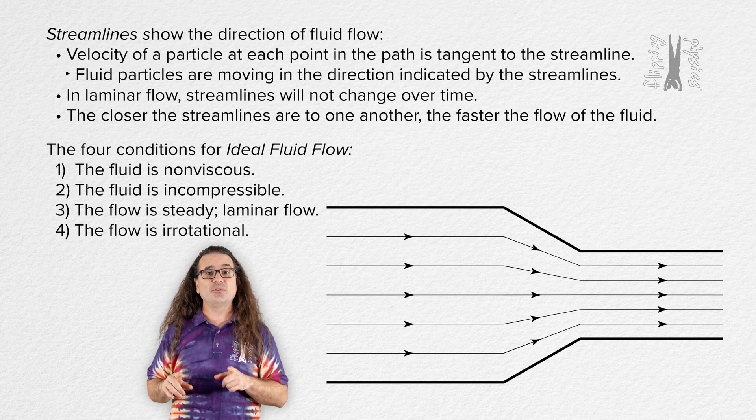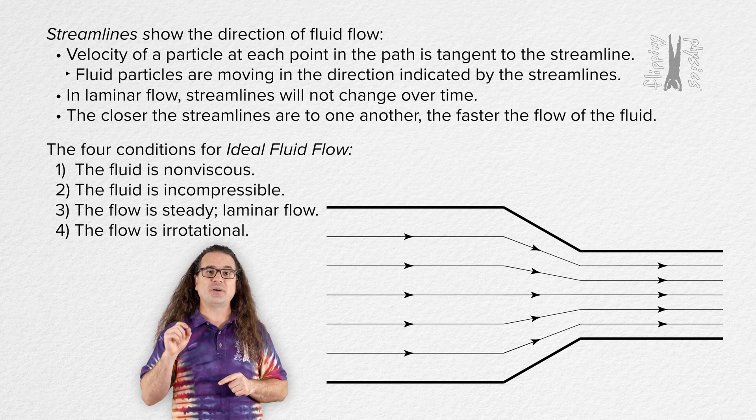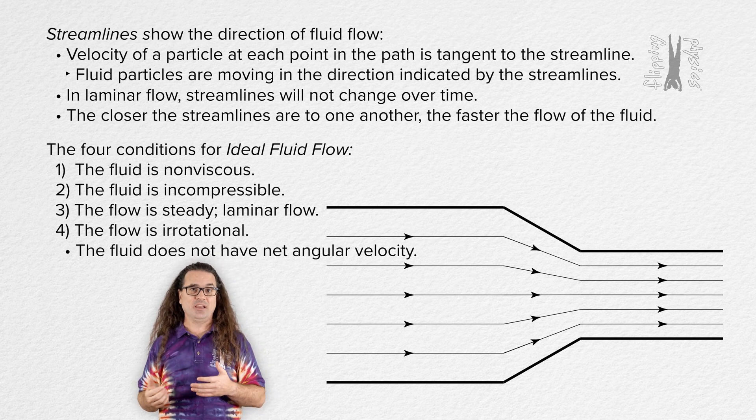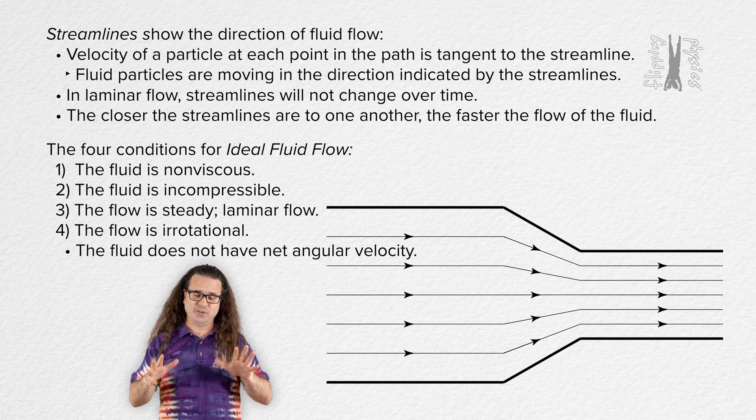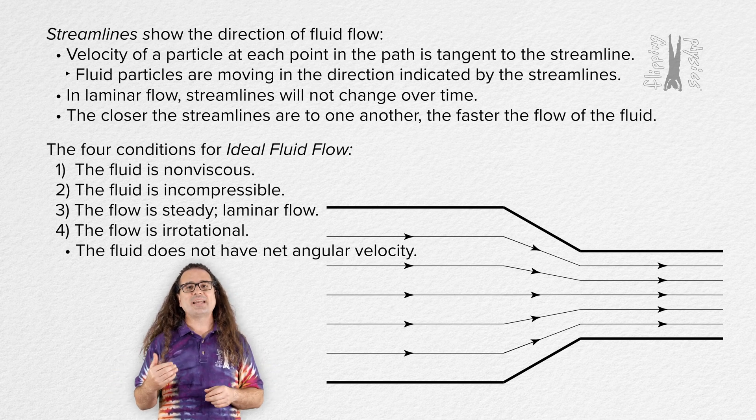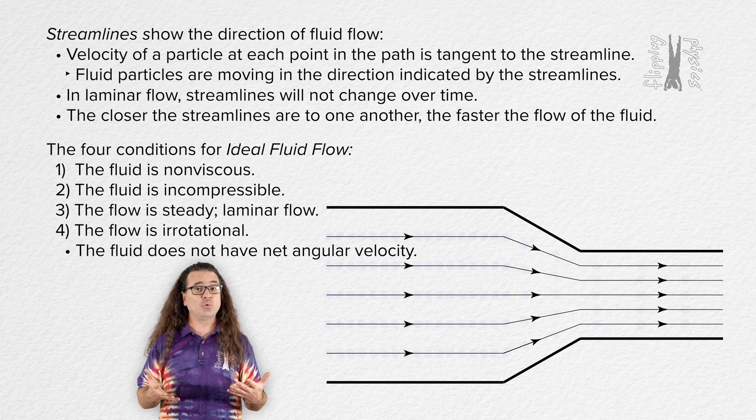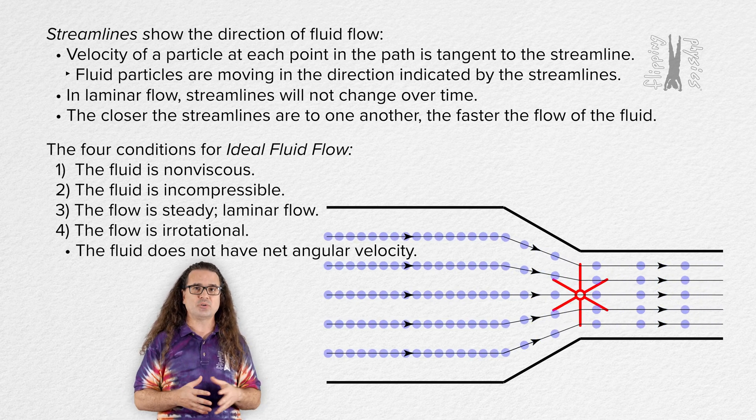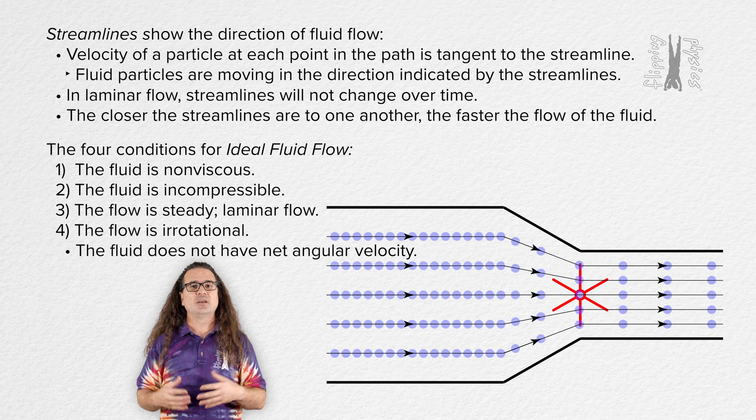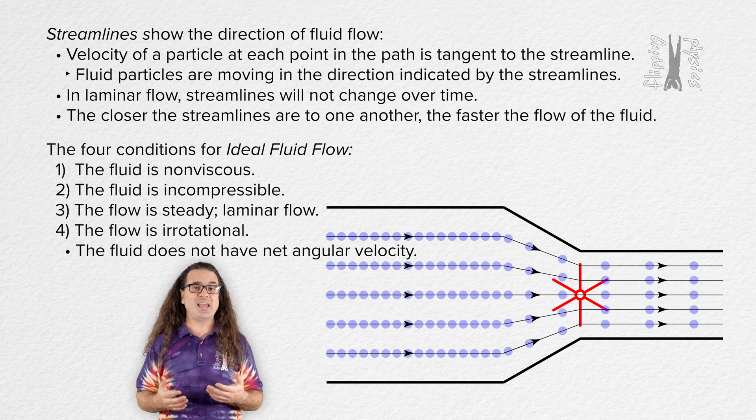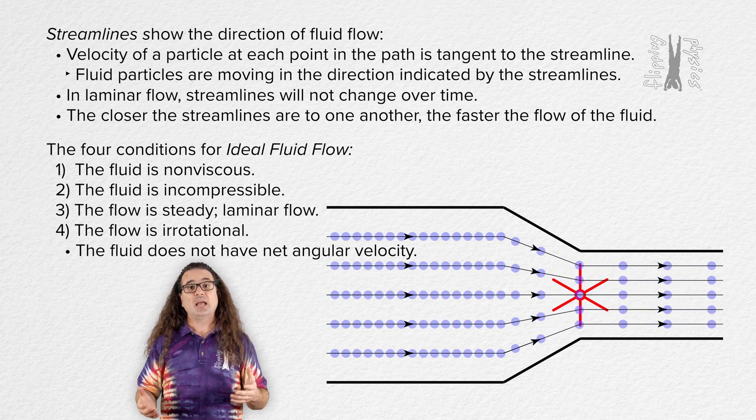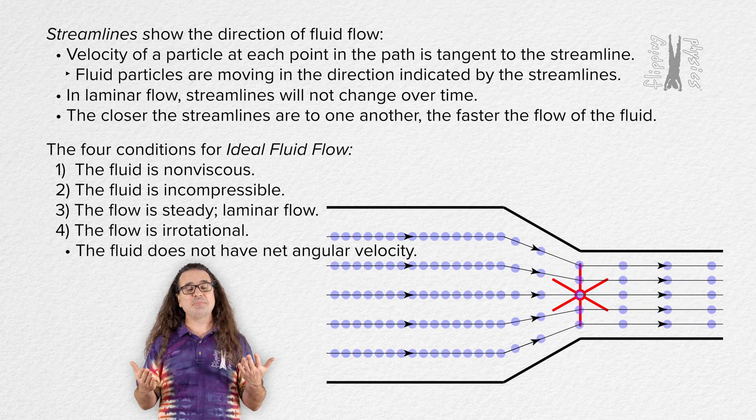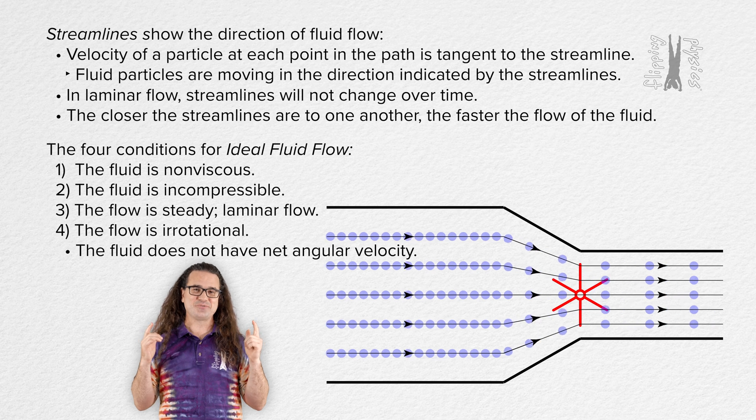The last condition for ideal fluid flow is that ideal flow is irrotational. That means the fluid does not have net angular velocity. The fluid does not rotate. One typical way that is illustrated is to say that if you were to place a small paddle wheel in the fluid, the paddle wheel would not rotate about its center of mass. The paddle wheel would maintain an angular velocity of zero. And those are the four conditions for ideal fluid flow. Thank you very much for learning with me today. I enjoy learning with you.